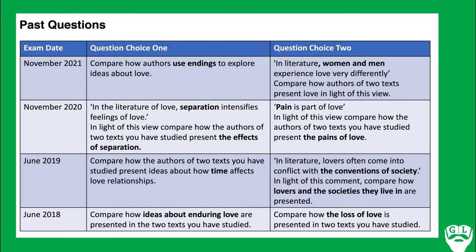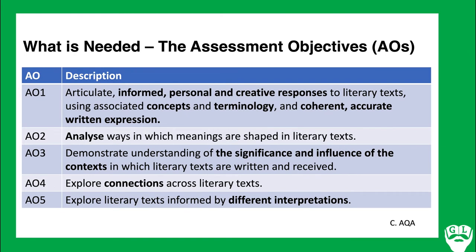What do you need to do to get the top marks? The marks are awarded on what we call assessment objectives, also known as AOs. Every question is out of 25 marks, and those 25 marks aren't equally proportioned across all five assessment objectives. Assessment objective one looks at this idea of an informed, personal, creative response to literary texts — concepts, terminology, but also a coherent, accurate written expression. I like to refer to AO1 as the beating heart of what you do in an examination: it is effectively how you're crafting your essay.